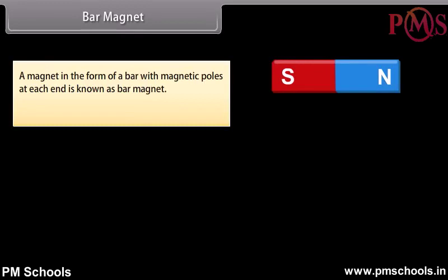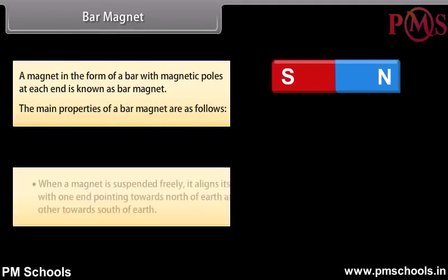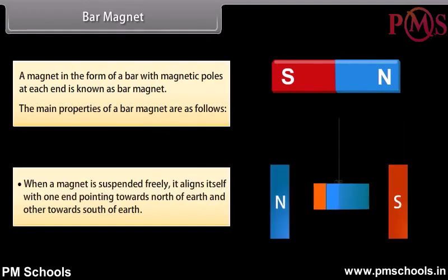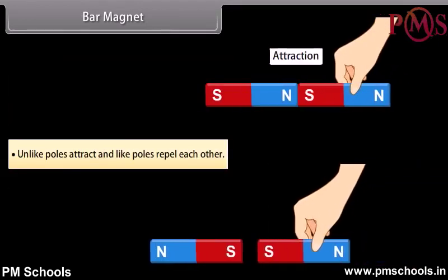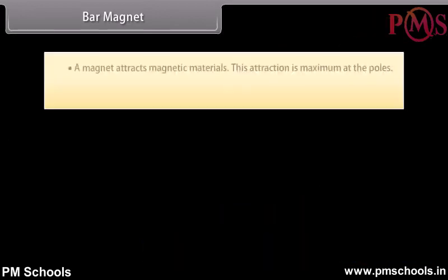Bar magnet: A magnet in the form of a bar with magnetic poles at each end is known as a bar magnet. The main properties of a bar magnet are as follows: when a magnet is suspended freely, it aligns itself with one end pointing towards the north of Earth and the other towards the south of Earth. Unlike poles attract and like poles repel each other. A magnet attracts magnetic materials, and this attraction is maximum at the poles.